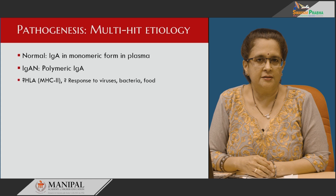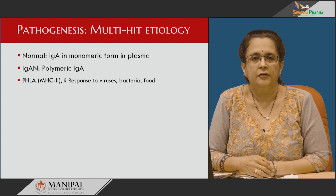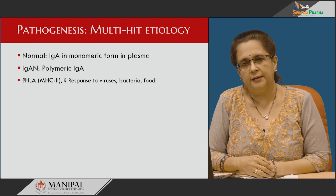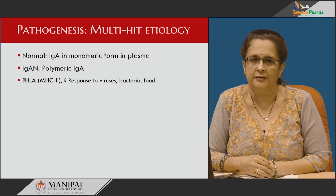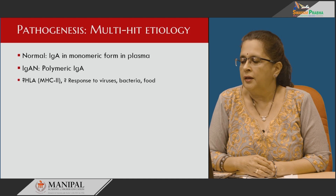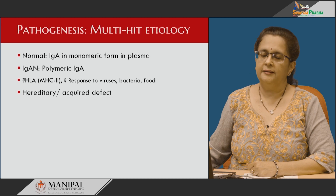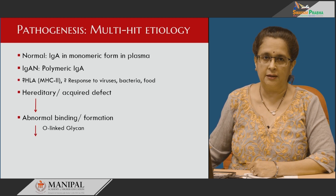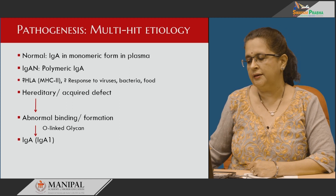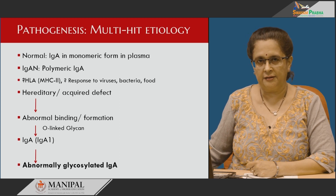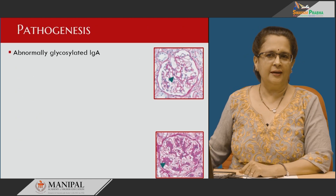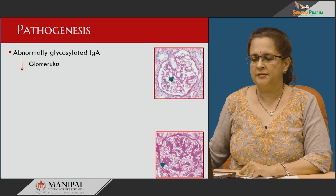Familial susceptibility to this disease is HLA-linked and may be associated with certain loci on MHC2. Epidemiological studies have shown that susceptibility may also be linked in some individuals to an altered response to certain viruses, bacteria, or certain antigens in food. In these individuals, a hereditary or acquired defect causes abnormal binding of a galactose-linked sugar called O-linked glycan to a specific region in IgA1, giving rise to an abnormally glycosylated IgA, which is the most important culprit in development of IgA nephropathy.